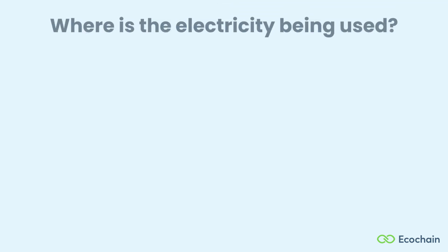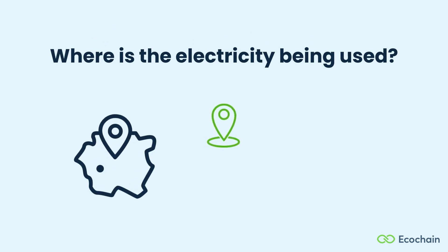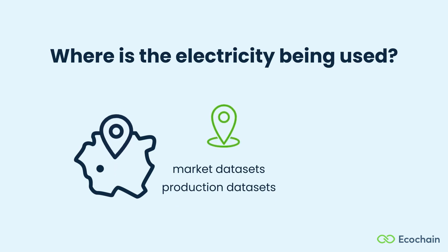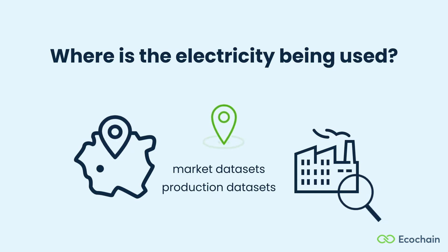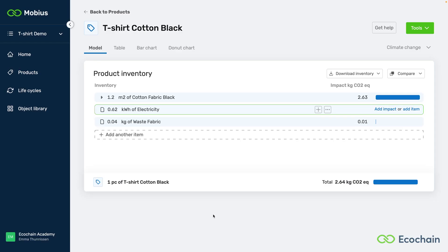Lastly, consider the location where the electricity is being used. EcoInvent offers comprehensive regional coverage for electricity datasets, including market and production datasets for each country. For larger countries, there are even different regions within the database. You should therefore look up where the product you're modeling is being produced. With the answers to these questions, you can proceed to find the most suitable dataset. Now, let's move to Mobius for a practical example.